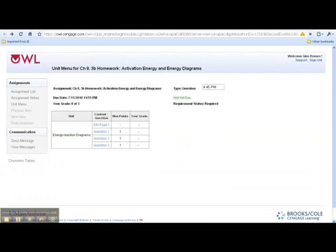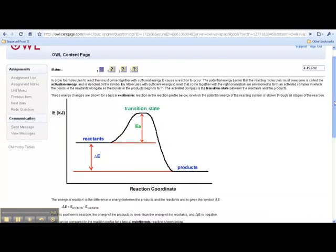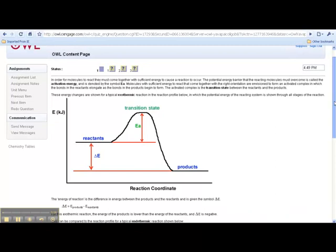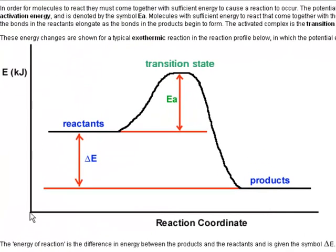Continuing my attempt to explain activation energy, I'm going to use OWL to further that explanation. I'll click on the information page. Here's a funny-looking curve. On the y-axis is energy — down here is low value energy, and up here is high value energy. The x-axis is not time; it's just kind of where the reaction is. At the beginning, over here, we have reactants, and at the end, we have products.